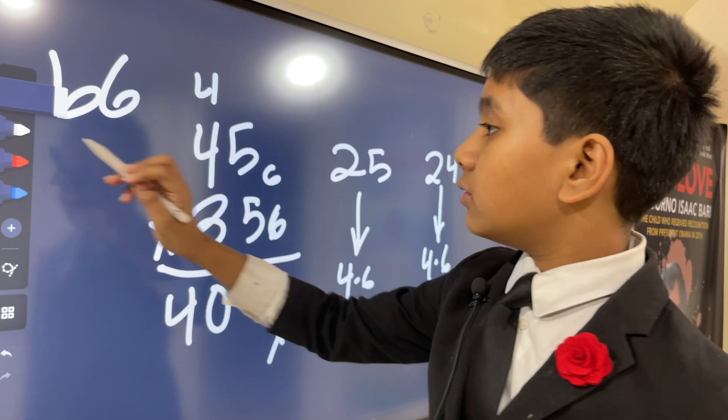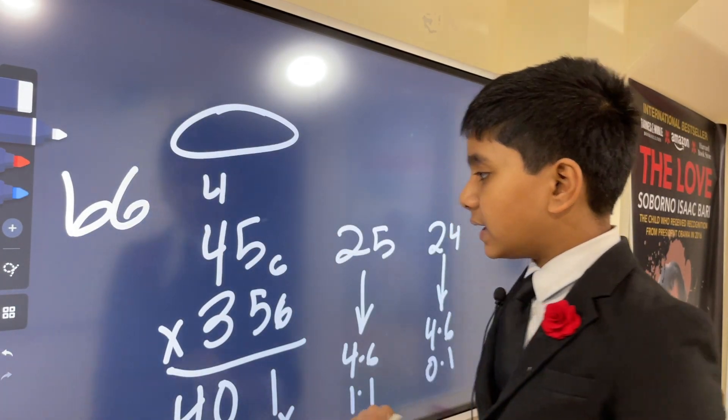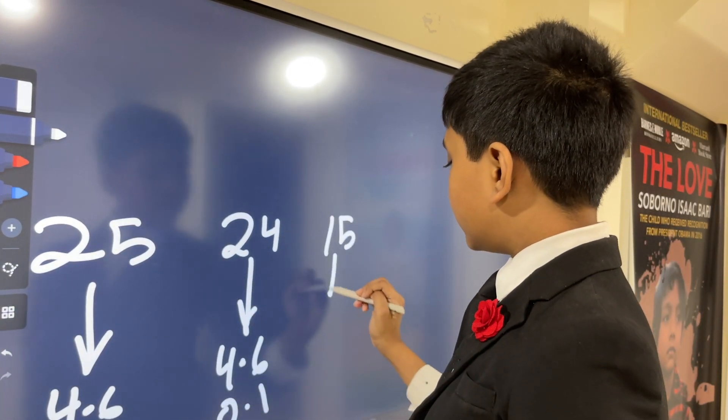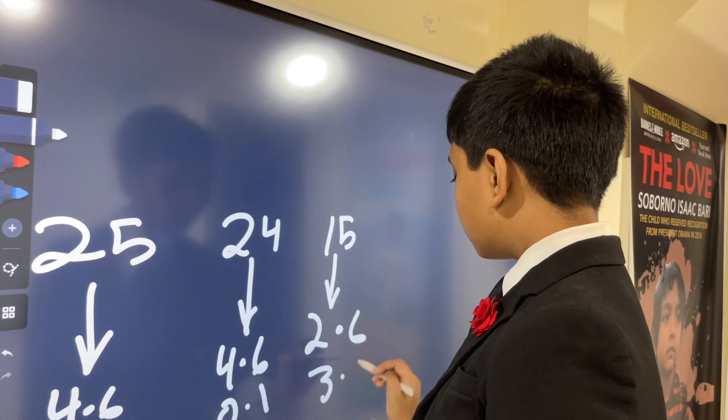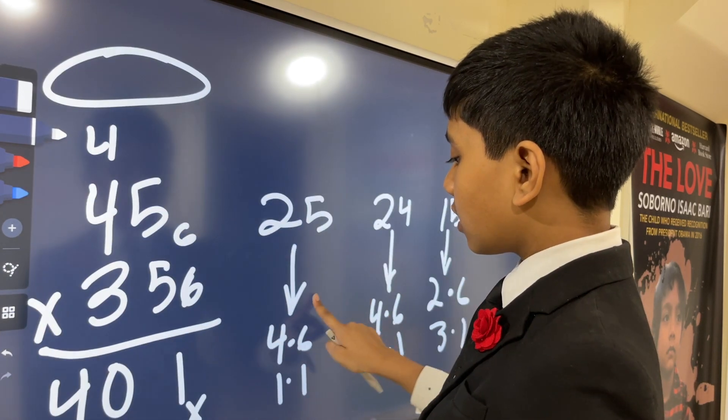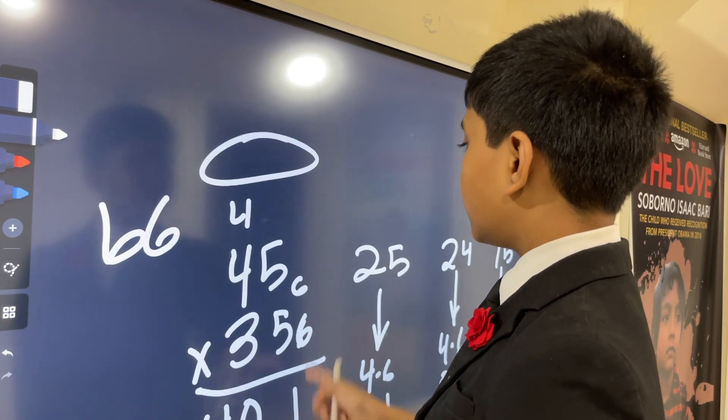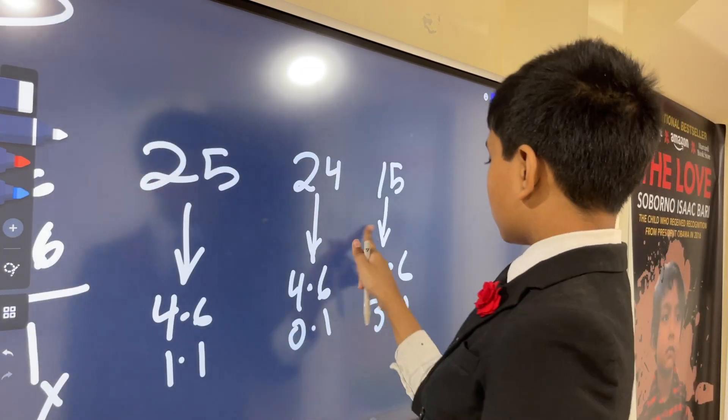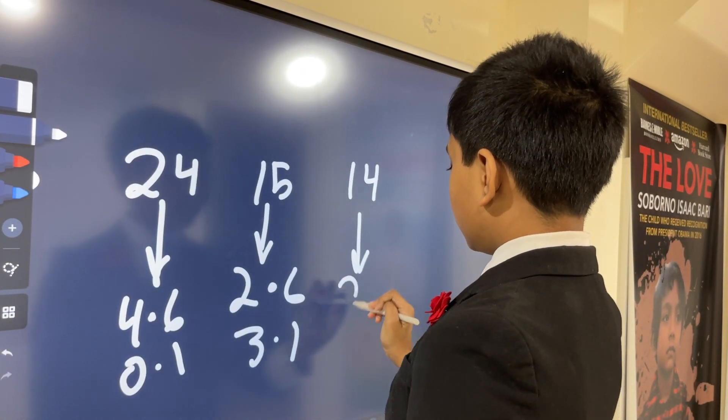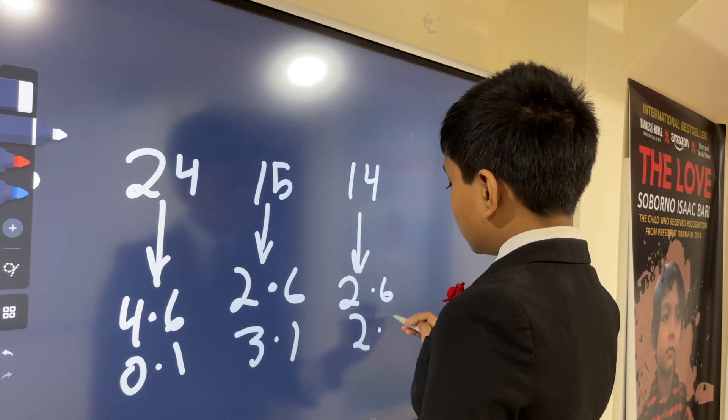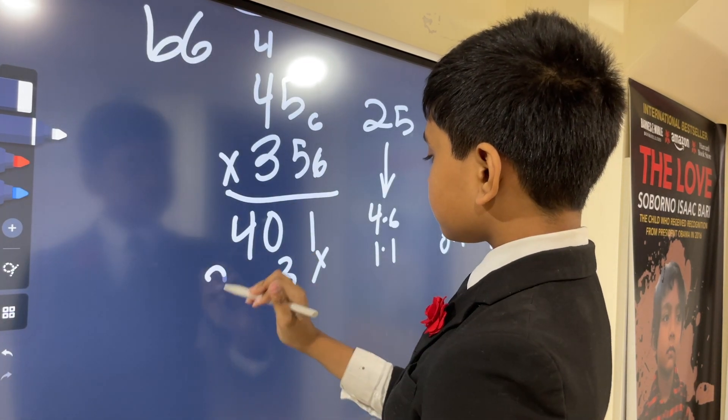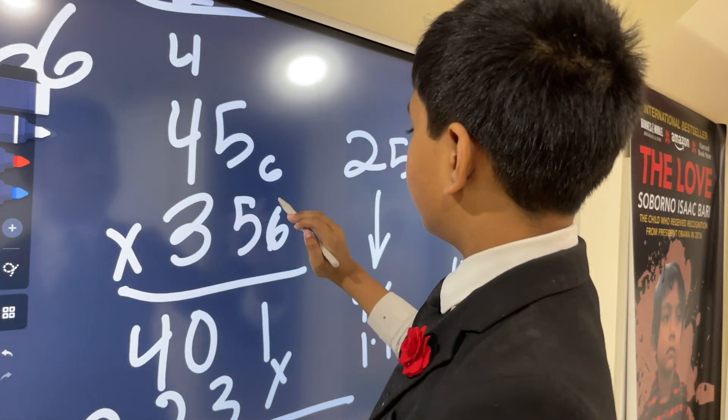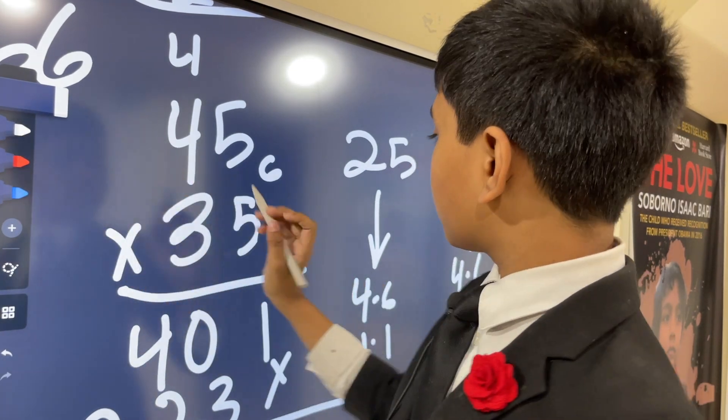Now 3 times 5 is 15. 15 is going to be 2 times 6 plus 3 times 1, so it's 23. We take the 3 and carry the 2. 3 times 4 plus 2 is 14, which is 2 times 6 and 2 times 1, so it's 22.